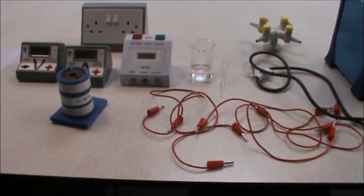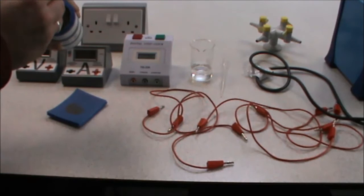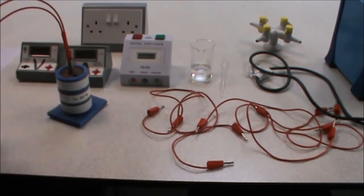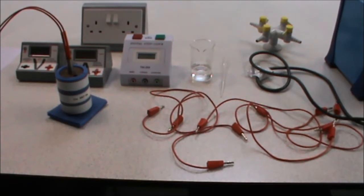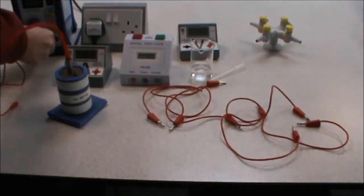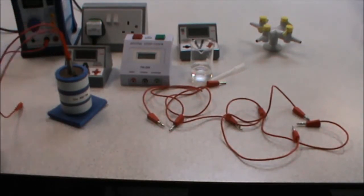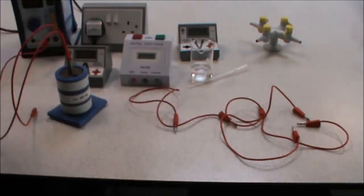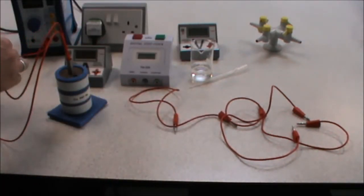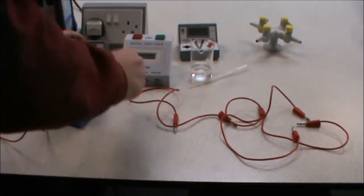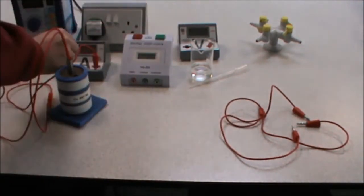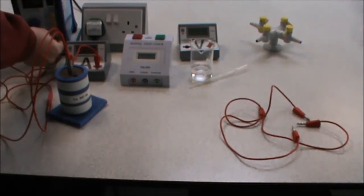Step two: place a heater in the larger hole in the block. Connect the ammeter, power pack, and heater in series. So we connect from the power supply to the heater, from the heater to the ammeter, and from the ammeter back to the power supply.